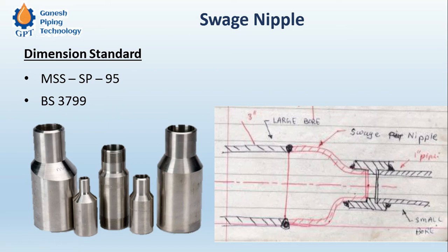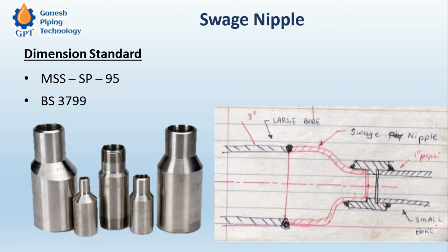So on one side the swage nipple is butt welded and on the other side it is socket welded — that is the purpose of using the swage nipple. Like reducers, swage nipples can be concentric or eccentric. On the small bore side, there are two connection options available: the end can be either socket welded or threaded.